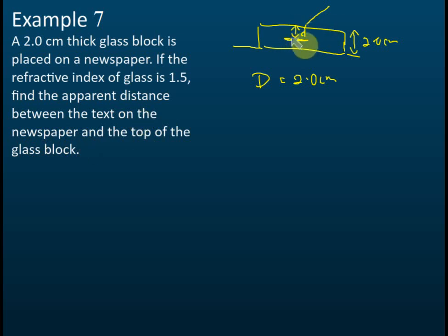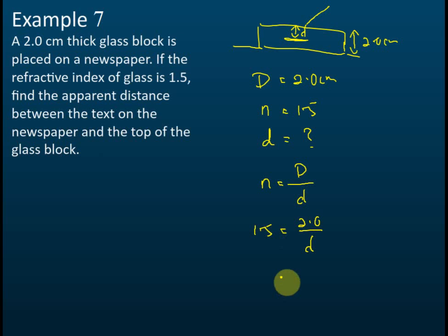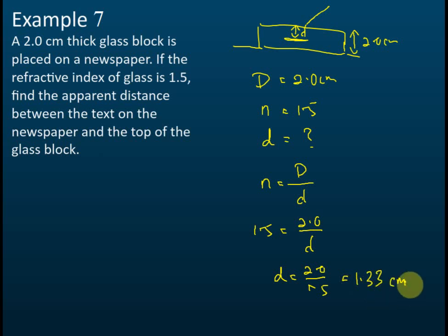They want the apparent depth — the apparent position of the text relative to the top of the glass. So we use the formula n equals real depth over apparent depth: 1.5 equals 2.0 divided by apparent depth d. Therefore, apparent depth d equals 2.0 divided by 1.5, which equals 1.33 cm.